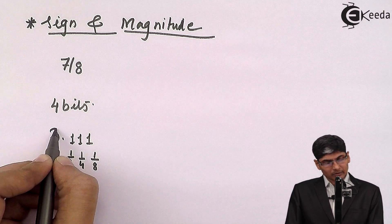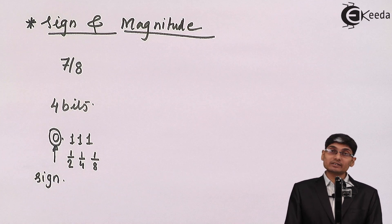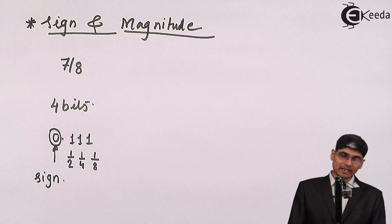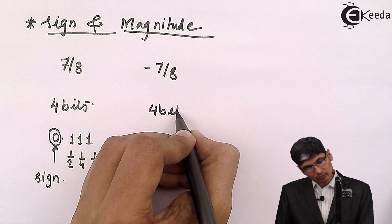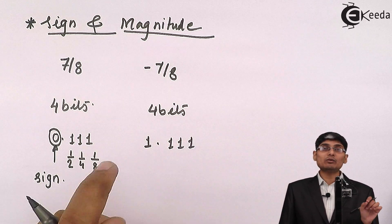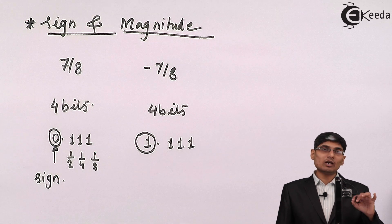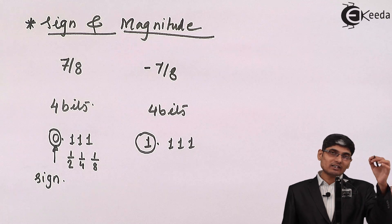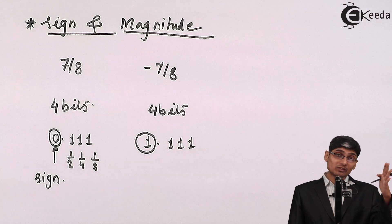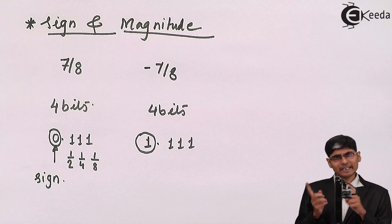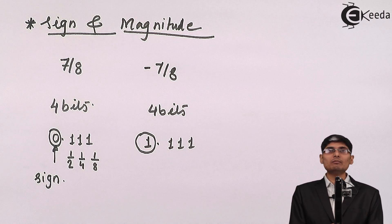This leading bit now denotes the sign. If there is a 0 in this bit position then the number is positive; if there is a 1 in the sign bit then the number is negative. So I can write minus 7/8 using 4 bits as 1.111. The magnitude is 0.111 and because the first bit is 1, it is a negative number, showing minus 7/8.